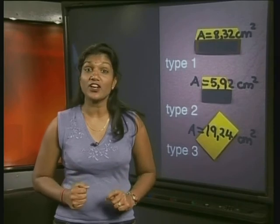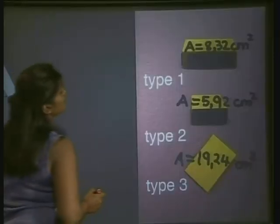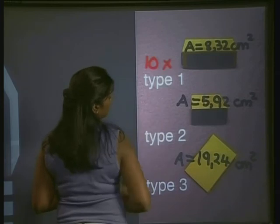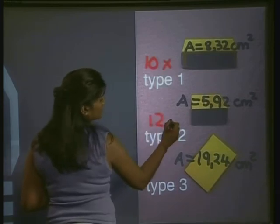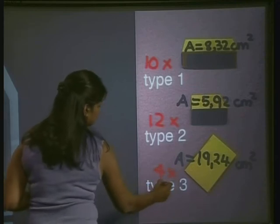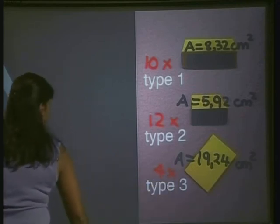So now to find the area of the structure, we just need to add all of those areas together. When we counted the surfaces we found that we had 10 times Type 1, 12 times Type 2, and 4 times Type 3. Now let's work out the area.